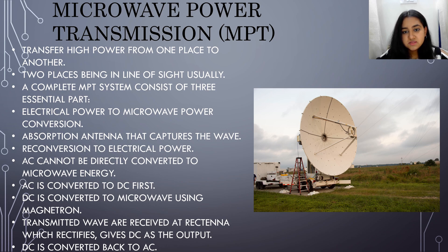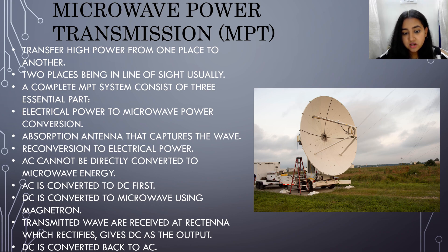Microwave power transmission (MPT) transfers high power from one place to another, with the two places typically being in line of sight. A complete MPT system consists of three essential parts: electrical power to microwave power conversion, an absorption antenna that captures the waves, and reconversion to electrical power. AC cannot be directly converted to microwave energy, so AC is first converted to DC, which is then converted to microwave using a magnetron. The transmitted waves are received at a rectenna, which rectifies them and gives DC as output, which is then converted back to AC.